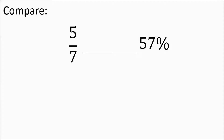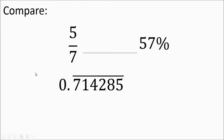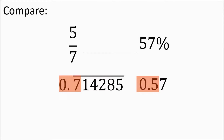Pause if you want — we've got five-sevenths compared to 57 percent. Using the sevenths trick, five-sevenths starts with 0.7 and continues with the repeating pattern 142857, giving approximately 0.7142857. 57 percent is 0.57. Focusing on the tenths place, seven-tenths is greater than five-tenths.